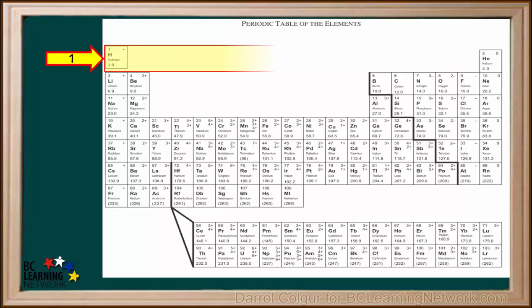The first period, called Period 1, contains elements 1 and 2, hydrogen and helium. Notice Period 1 contains only two elements.